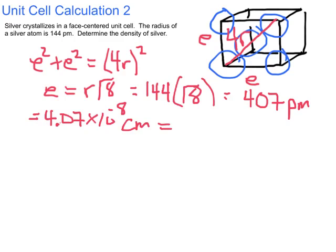Which then is going to tell me that the volume of my cube is going to be the edge cubed, which in this case will equal, in centimeters cubed, 6.74 times 10 to the minus 23 cubic centimeters. And again, I wanted to get it in cubic centimeters so I could play around with units that you and I are comfortable with when it comes to density.